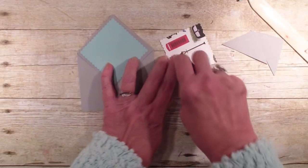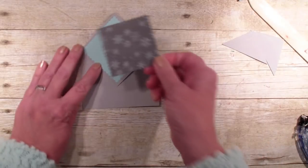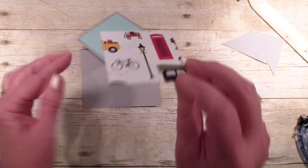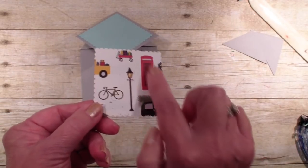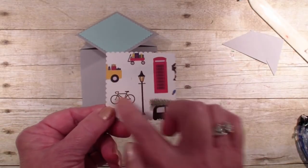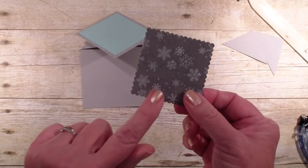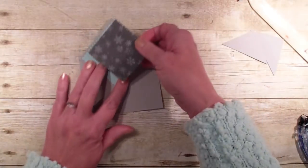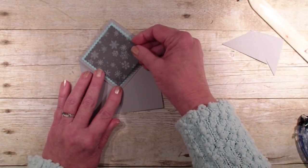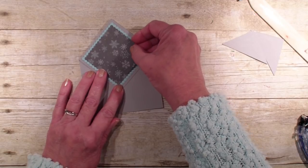And then again, this is around the world designer series paper. I used that scallop again. Stampin' Up! is doing a great job with our designer series paper. If it has a bold image on one side, they're giving a softer print on the back side. So we're going to lay that there.